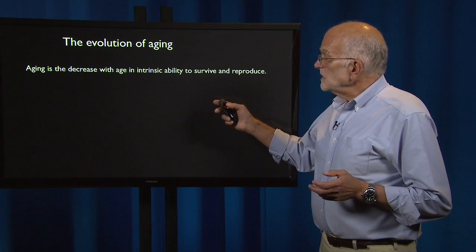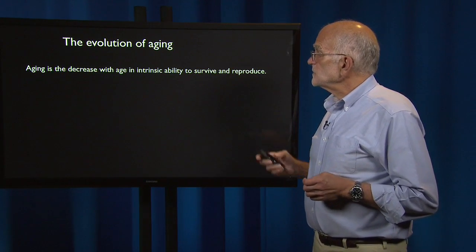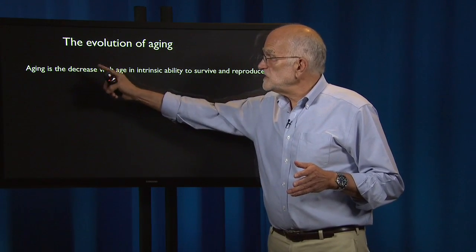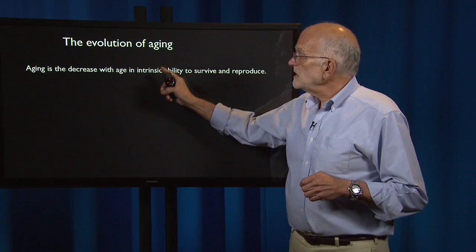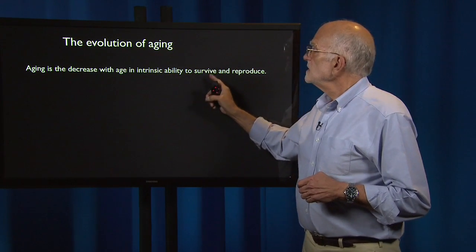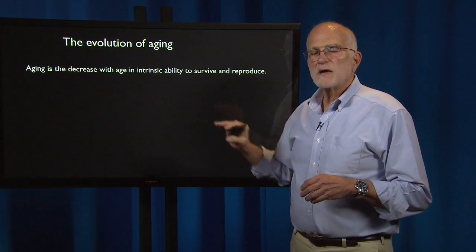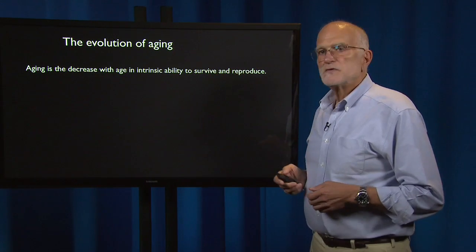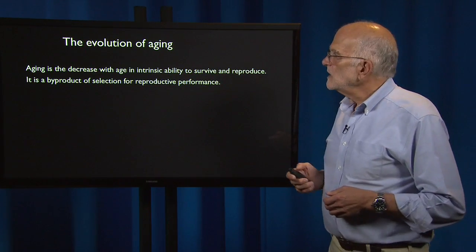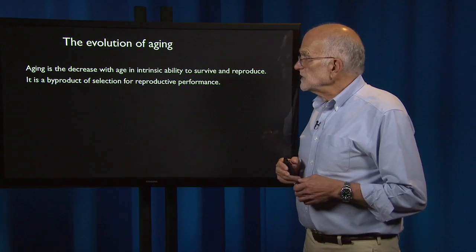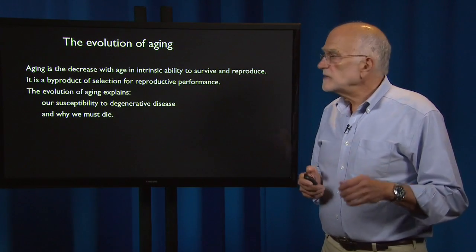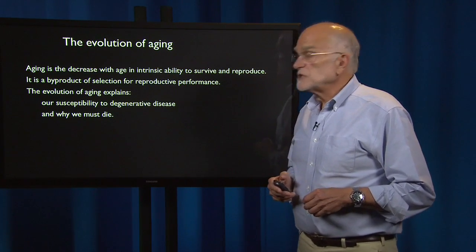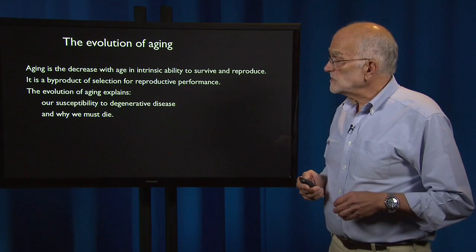Aging is the decrease with age in intrinsic ability to survive and reproduce. We're focusing on things happening inside the organism as it ages that make it less able to survive and reproduce. It is a byproduct of selection for reproductive performance — it's not selected directly. And it explains both our susceptibility to degenerative disease and why it is that we must die.